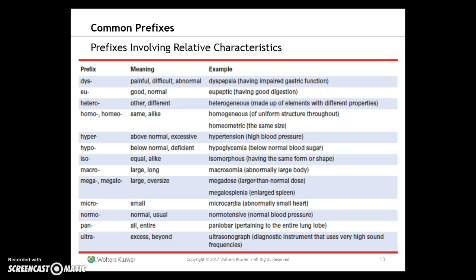Prefixes involving relative characteristics include: dys- (dyspepsia); eu- pronounced 'you' (eupeptic); hetero- (heterogeneous); homo- (homogeneous, homometric); hyper- (hypertension); hypo- (hypoglycemia); iso- (isomorphous); macro- (macrosomia); mega- or megalo- (megadose, megalosplenia); micro- (microcardia); normo- (normotensive); pan- (panlobar); ultra- (ultrasonograph).